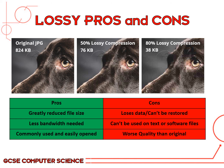A major disadvantage is that the quality is worse than the original — you do lose some data. Even though we can't tell much difference between pictures on this slide, if it were put on a really big display, the quality difference would be obvious. The major use of lossy compression is that it greatly reduces file size — from 824 kilobytes down to 38 kilobytes, which is a massive reduction.